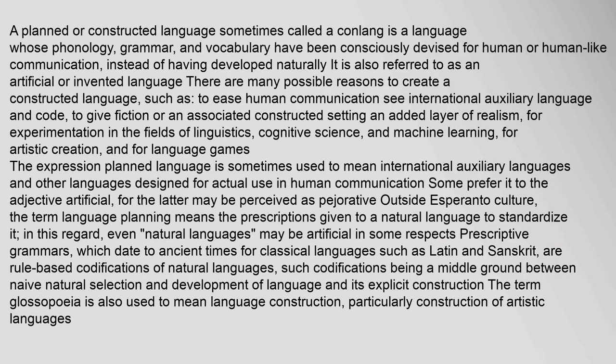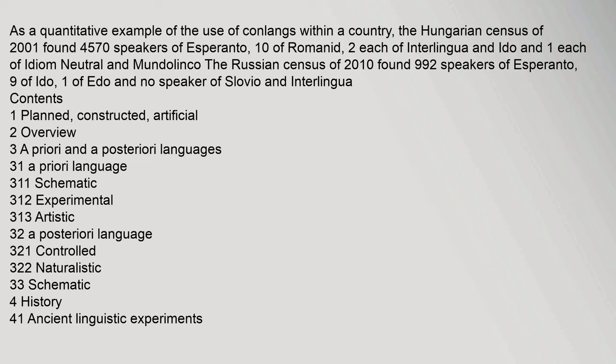As a quantitative example of the use of conlangs within a country, the Hungarian census of 2001 found 4,570 speakers of Esperanto, ten of Romanid, two each of Interlingua and Ido, and one each of Idiom Neutral and Mundolinko. The Russian census of 2010 found 992 speakers of Esperanto and nine of Ido.